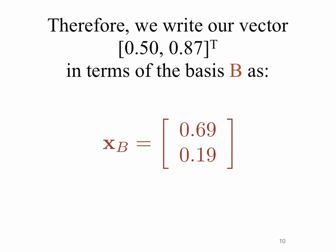Therefore we can write our vector (0.5, 0.87) in terms of the basis b as (0.69, 0.19). We write that x with a subscript b because our vector x is now written in terms of the basis vectors b. If the vector is written in terms of the standard basis — i-hat, j-hat — then we don't put a subscript by the vector, because without a subscript it's assumed to be written in terms of the standard basis.